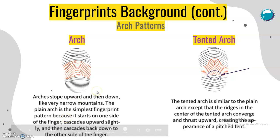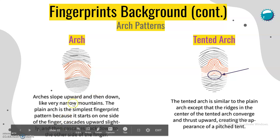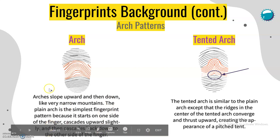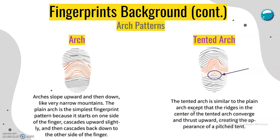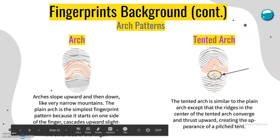The arch looks like this — arches slope upward and then down, like very narrow mountains. The plain arch is the simplest form pattern because it starts on one side of the finger, cascades upward, and then comes down. The tented arch is similar to the plain arch except that the ridges in the center converge and thrust upward, creating the appearance of a pitched tent.